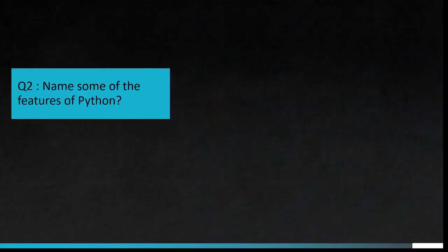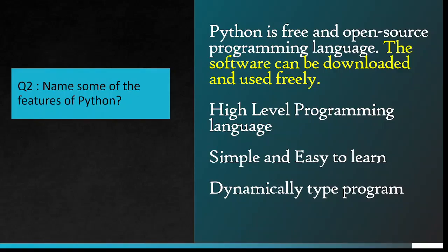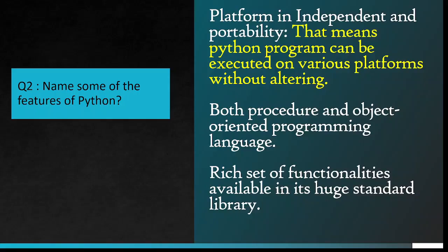Question number 2: Name some of the features of Python. Python is free and open-source programming language. The software can be downloaded and used freely. High-level programming language, simple and easy to learn. Dynamically typed program, platform independent and portability - that means Python programs can be executed on various platforms without altering.